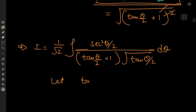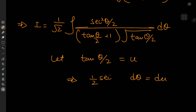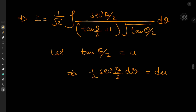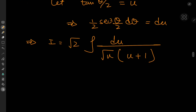Now for another substitution: let tangent(θ/2) equal u. This implies that 1/2 secant squared(θ/2) d theta equals du. So I needs an extra factor of 2, giving us 2 over root 2 — which is root 2 — times the integral of du divided by root u times u plus 1. Another simplifying substitution can be made here: let root u equal v.